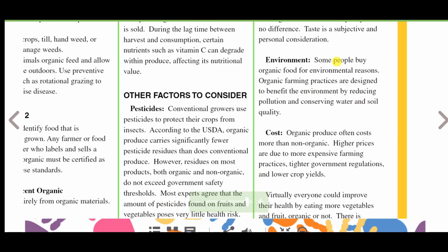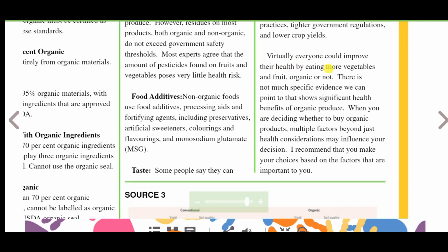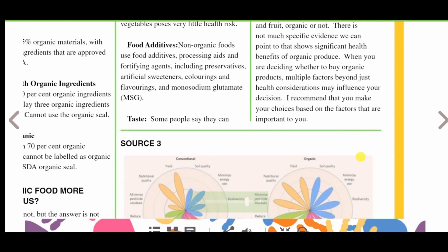Regarding the environment, some people buy organic food for environmental reasons. Organic farming practices are designed to benefit the environment by reducing pollution and conserving water and soil quality. Regarding cost, organic produce often costs more than non-organic. Higher prices are due to more expensive farming practices, tighter government regulations, and lower crop yields. Virtually everyone could improve their health by eating more vegetables and fruits, organic or not. When deciding whether to buy organic products, multiple factors beyond health considerations may influence your decision.